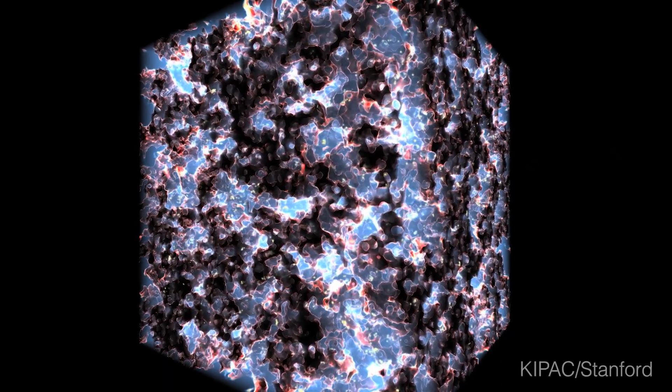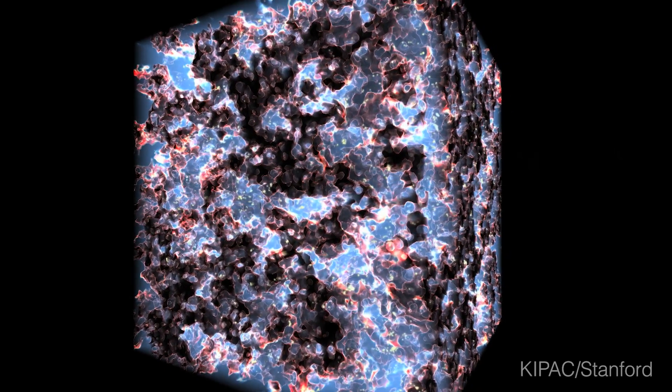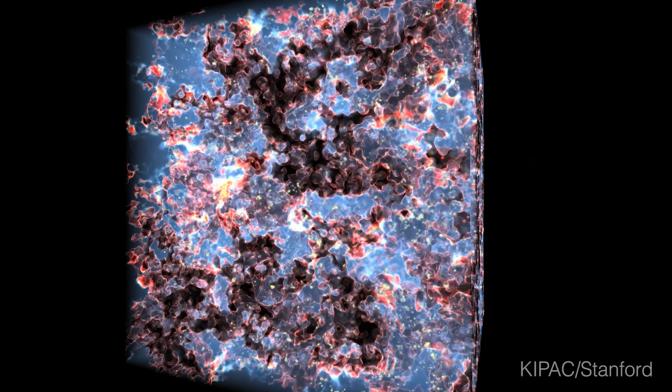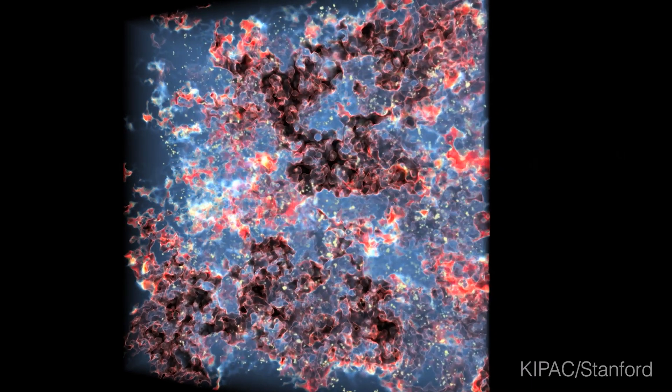And so there was a time, maybe about 200 million years, 300 million years after the Big Bang, when the gas between the stars and galaxies was very good at absorbing light. It had atoms with electrons and everything just got absorbed.